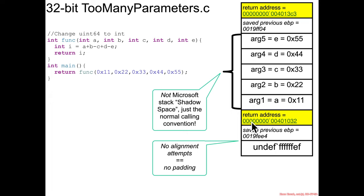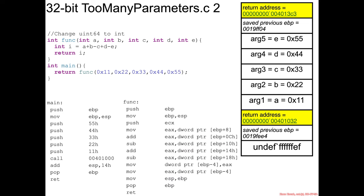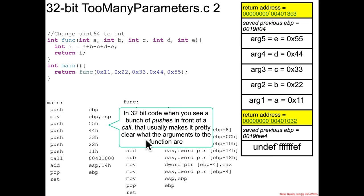When main calls func, you'd get a return address again, and func's first thing is push EBP, with no sort of padding or alignment attempts here. It just does the math of a plus b minus c plus d minus e and sticks it into i. A common thing about 32-bit code is that if you see a bunch of pushes right before a call, that typically gives you a very good hint of how many arguments there are and what the particular values are that the function was called with.